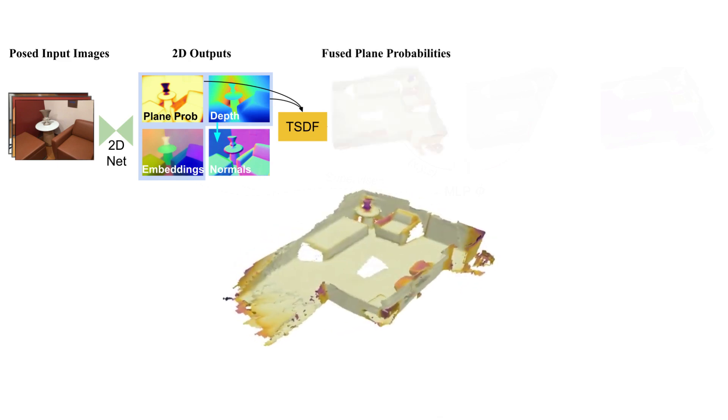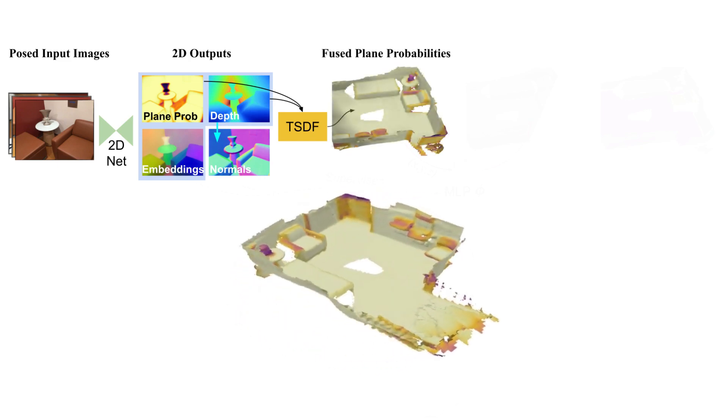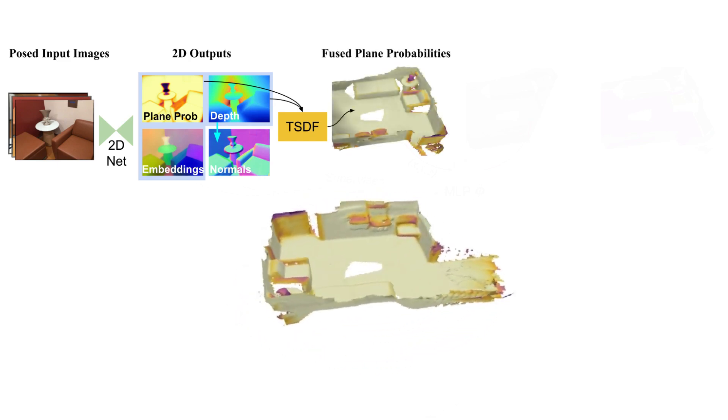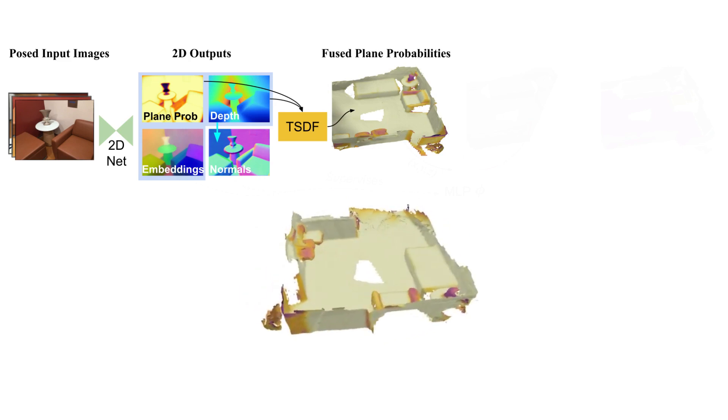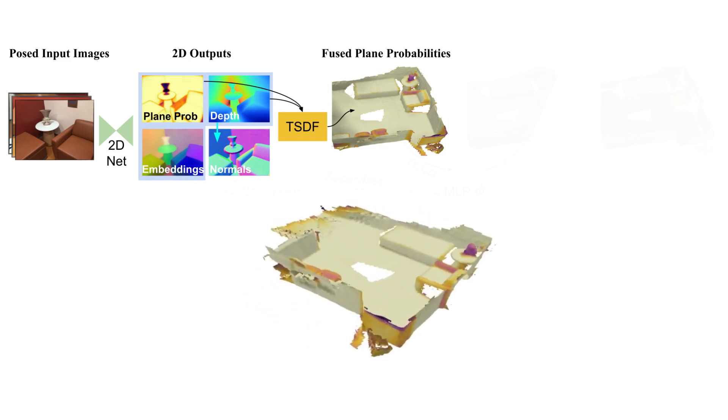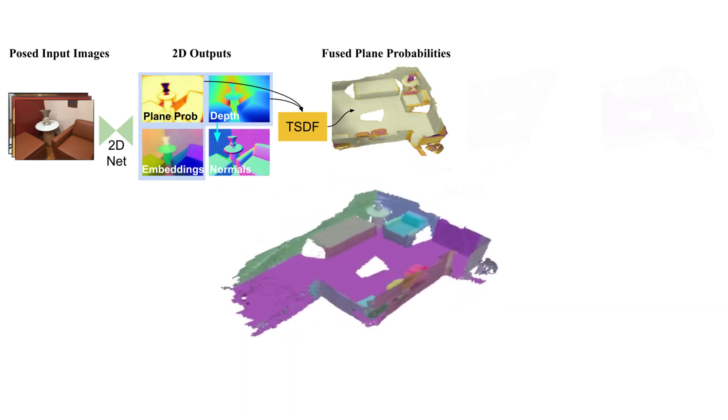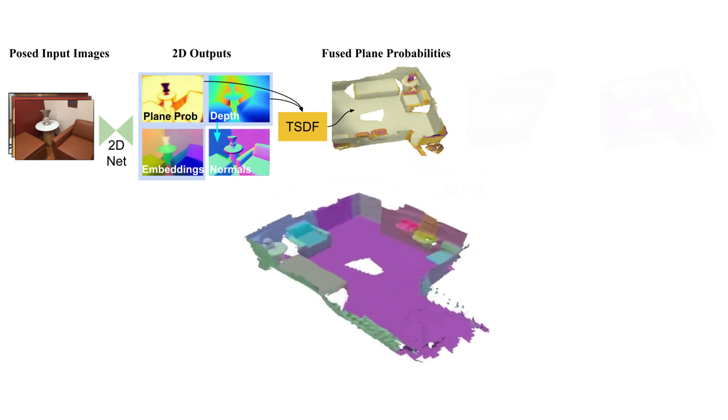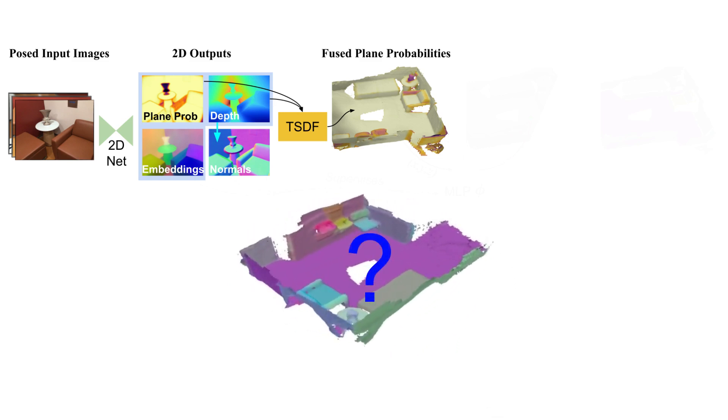We also compute surface normals from the estimated depth map. The per-image depth estimates are used in a TSDF fusion framework to obtain a mesh of the scene. The per-image estimates of plane probabilities are also fused into the TSDF, providing an indication of which vertices are planar and non-planar. Next, we fuse the per-image embeddings into a coherent 3D representation.